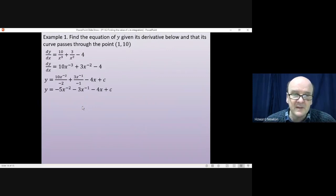Tidying that up a little would give us -5x⁻² - 3x⁻¹ - 4x + c, and writing it in the neatest way that you can do that would be -5/x² - 3/x - 4x + c.